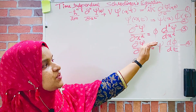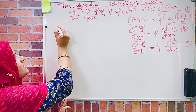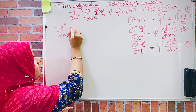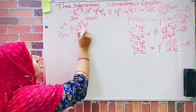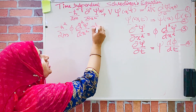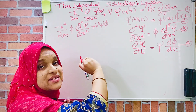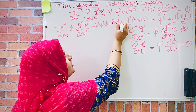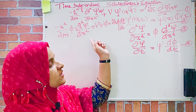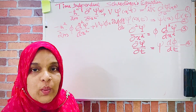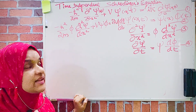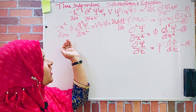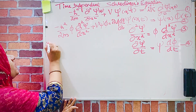Now, substituting equations 2, 3, and 4 into equation 1, we get: minus ℏ² by 2m times φ(d²ψ/dx²) plus V times ψφ equals iℏ times ψ(dφ/dt). To separate variables, we divide throughout by ψφ. The φ terms cancel on the left and the ψ terms cancel on the right, giving us the left-hand side as a function of x alone and the right-hand side as a function of t alone.